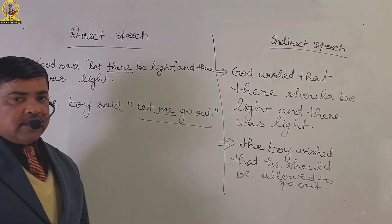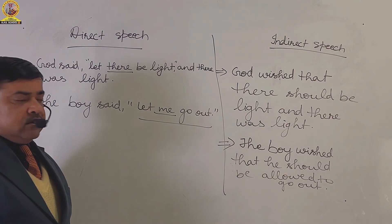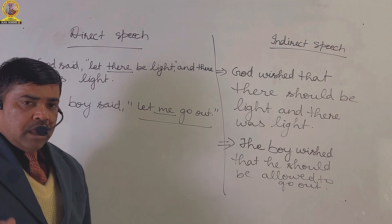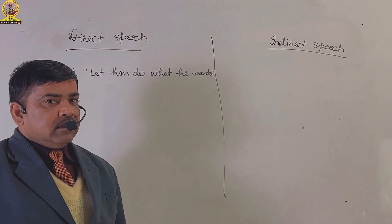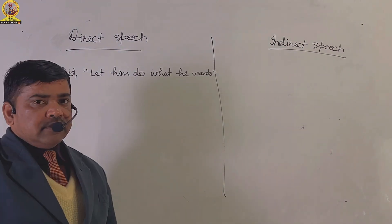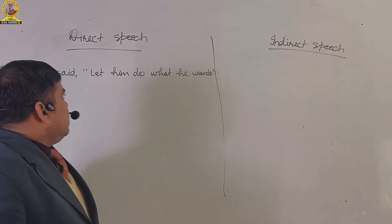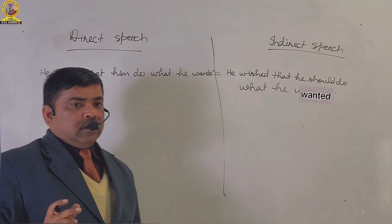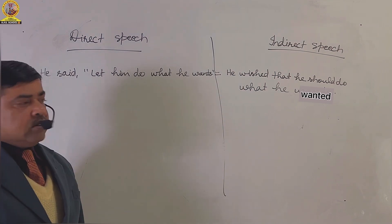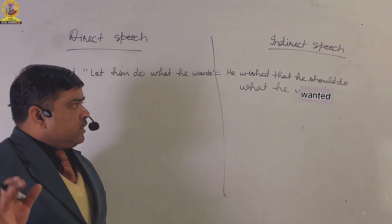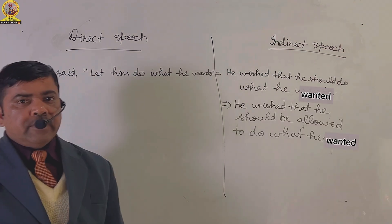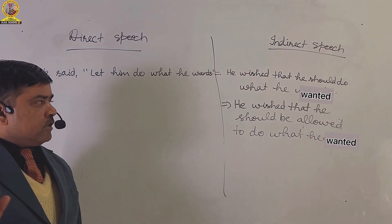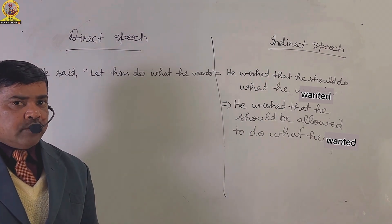And the indirect speech of the second example is: the boy wished that he should be allowed to go out. As the third example, I have taken a sentence in direct speech: 'He said, let him do what he wants.' The indirect speech will be: he wished that he should do what he wanted. Alternatively: he wished that he should be allowed to do what he wanted.